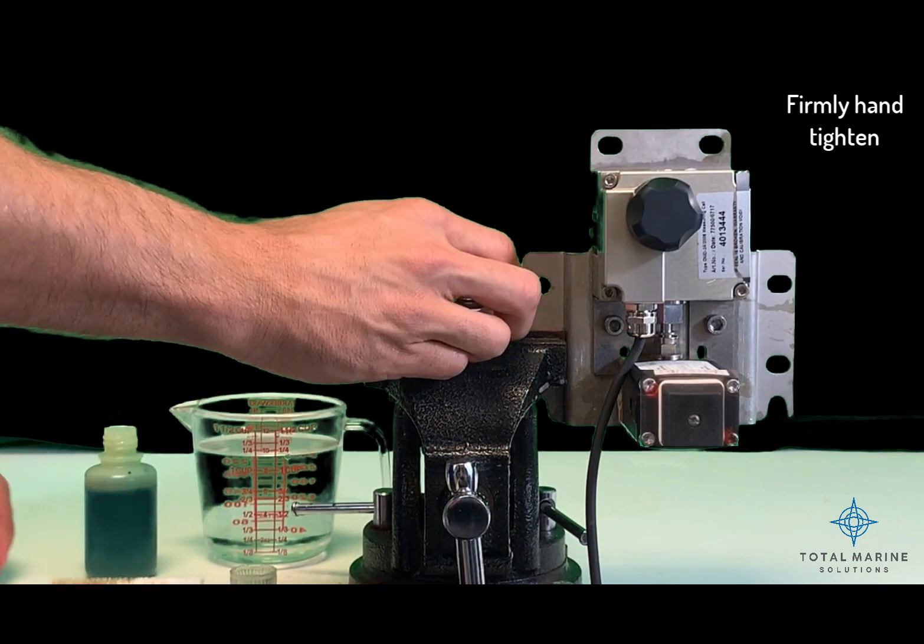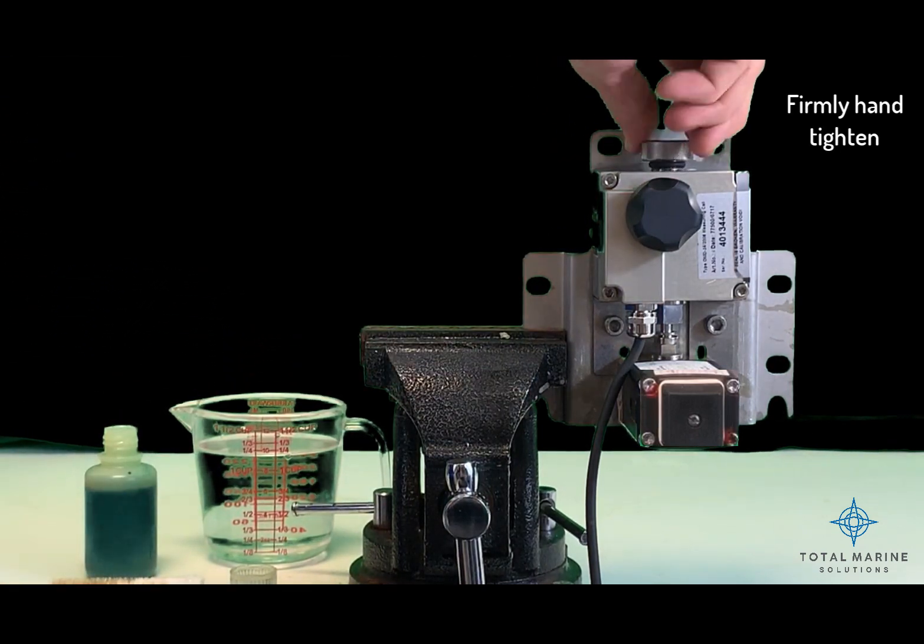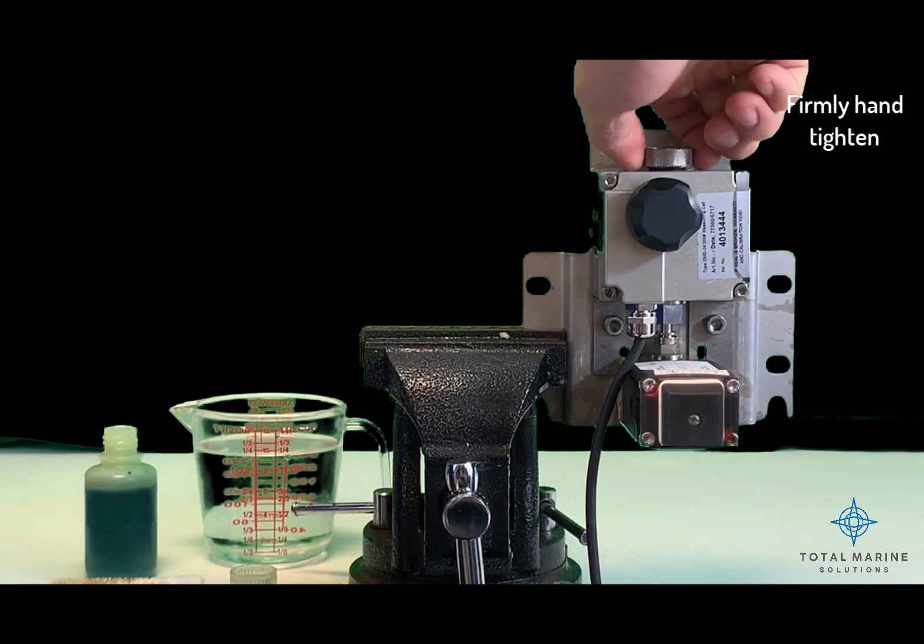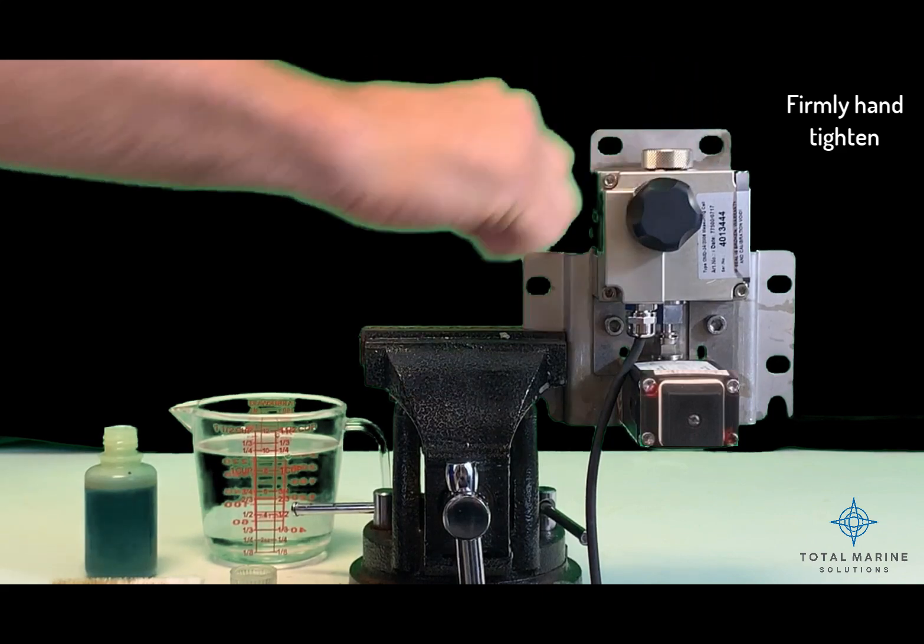Replace the cell cap. To avoid air bubbles in the stream, make sure to screw down the cell cap tightly. Be sure to only hand tighten the cell cap.